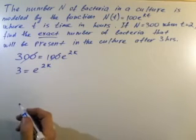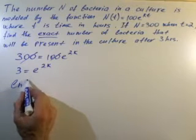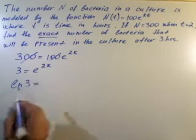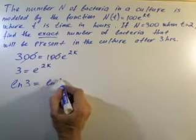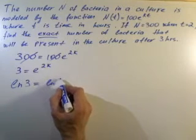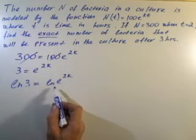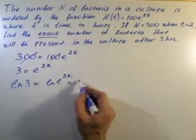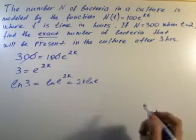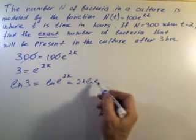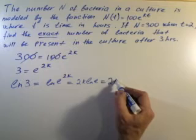Take logarithm, natural log of both sides, we get natural log of 3 equals natural log of e to the power of 2k, which equals 2k times natural log of e, which equals one. Then we get 2k left.